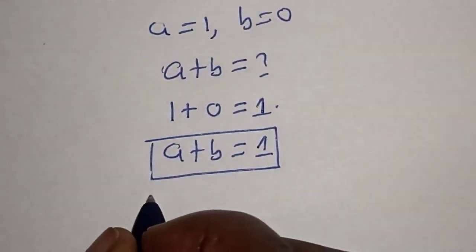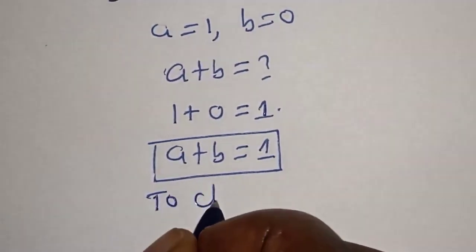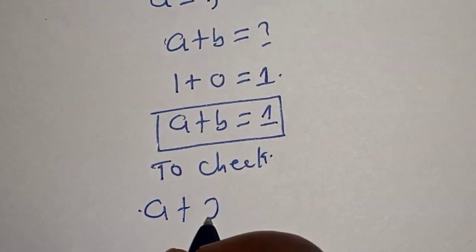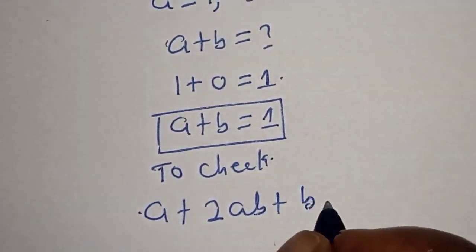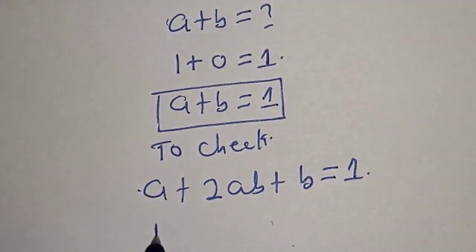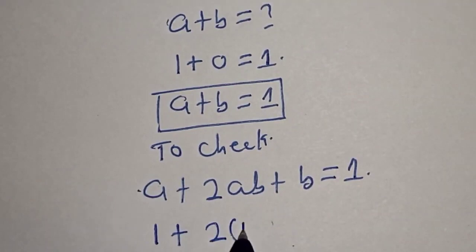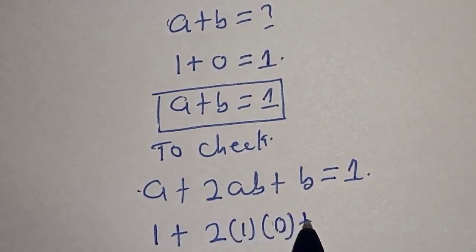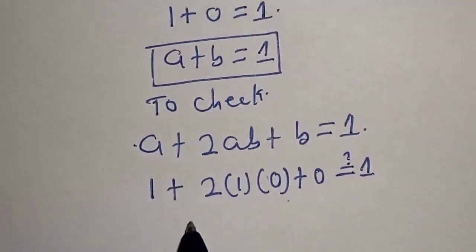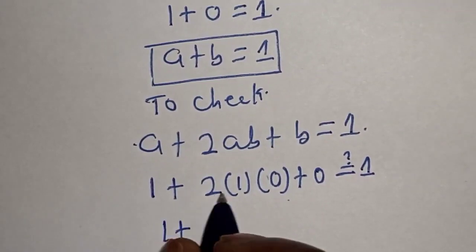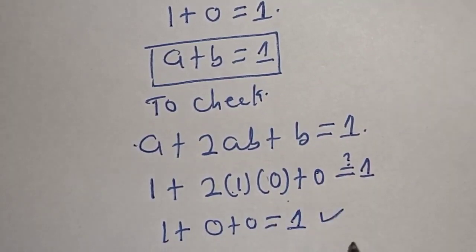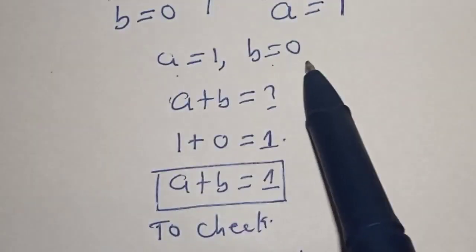We can check to confirm if our answer is right. We have the given equation: a plus 2ab plus b must equal 1. Substituting a equals 1 and b equals 0: 1 plus 2 times 1 times 0 plus 0 equals 1 plus 0 plus 0, which equals 1. This satisfies the given equation at a equals 1 and b equals 0.